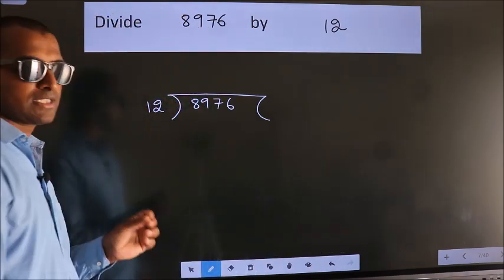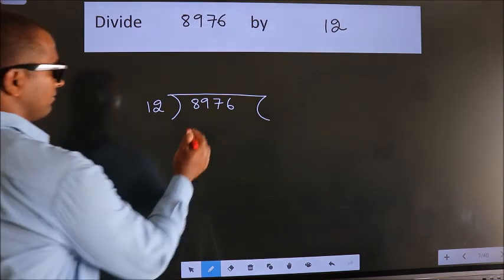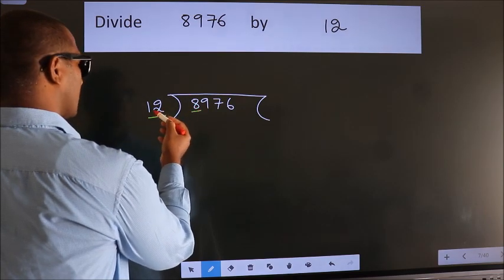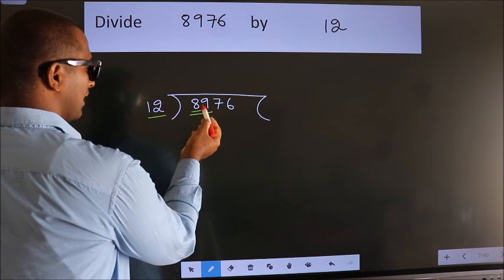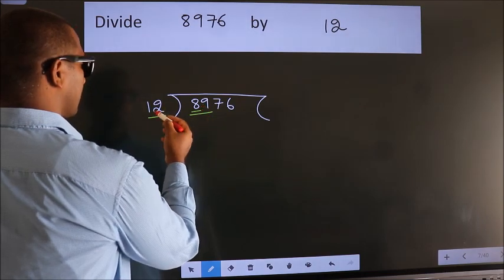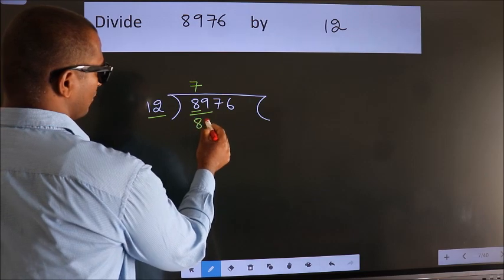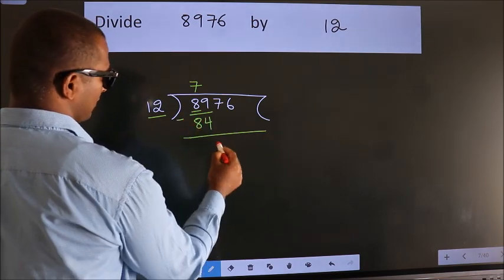This is your step 1. Next, here we have 8, here 12. 8 is smaller than 12, so we should take two numbers: 89. A number close to 89 in the 12 table is 12 sevens, 84. Now, we should subtract. We get 5.